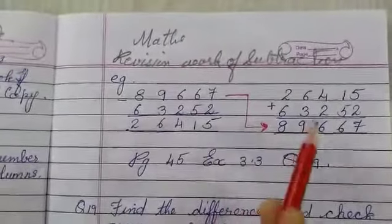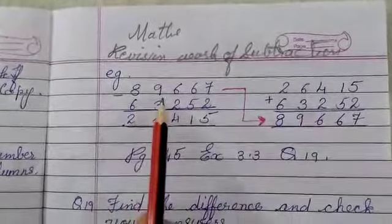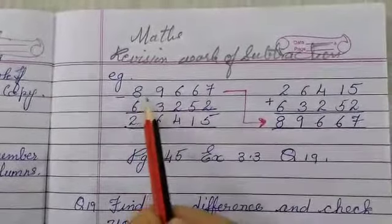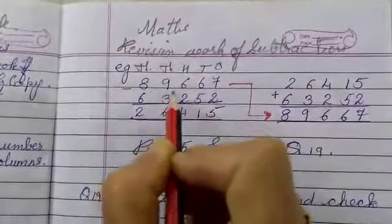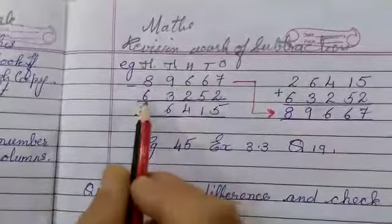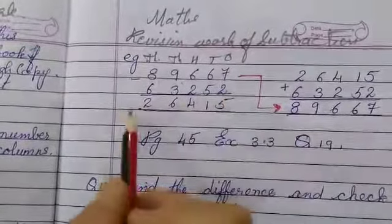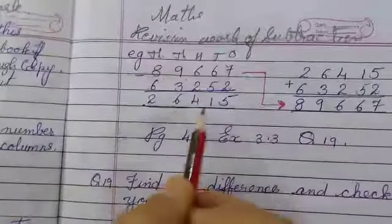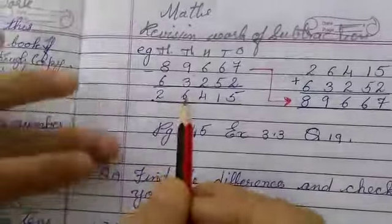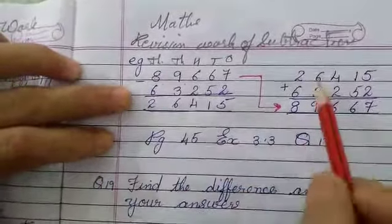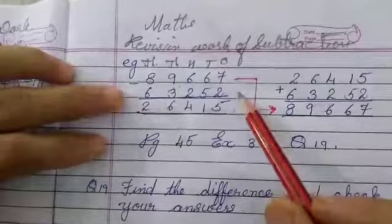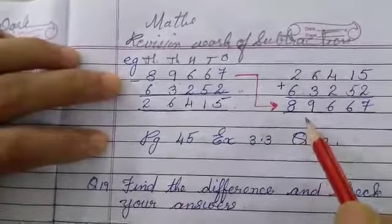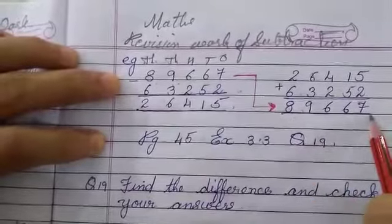Now I will be sending you these sums, how to do them and how to check them. So 89,667 minus 63,252. The answer we get is 26,415. Now what we do if we want to check our answer is correct or not, we add these two numbers and we will get the top number. So this is the way we do it.